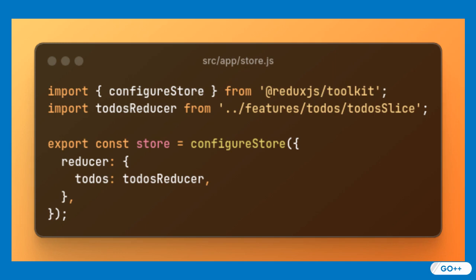This file sets up the Redux store using Redux Toolkit's configureStore function, integrating the to-dos reducer. By configuring the store in a dedicated file, you ensure a clear, maintainable architecture and seamless scalability for future features. The store initialization includes sensible defaults such as Redux DevTools support, thunk middleware, and improved error handling, enabling a robust development experience.